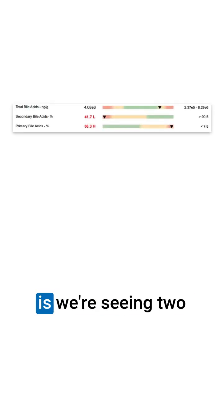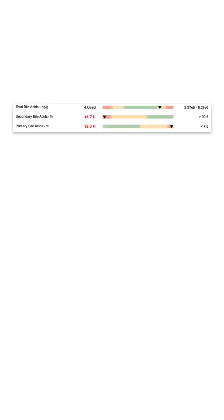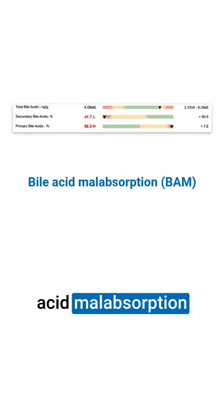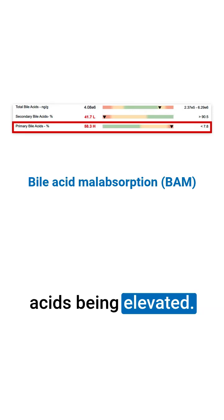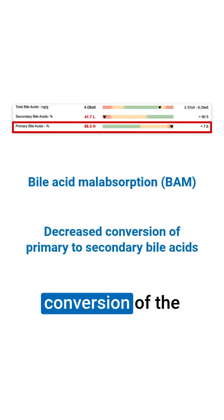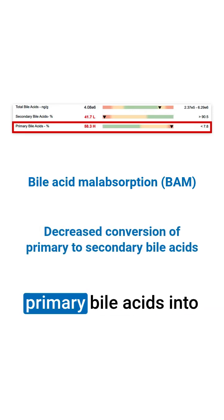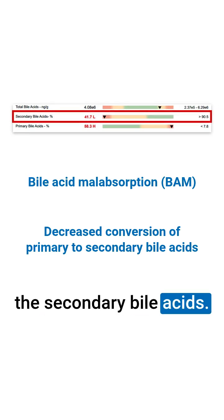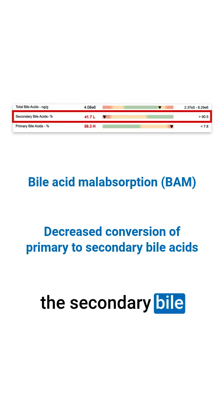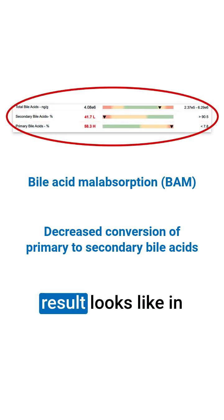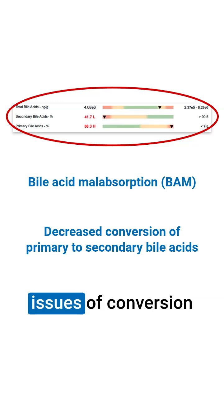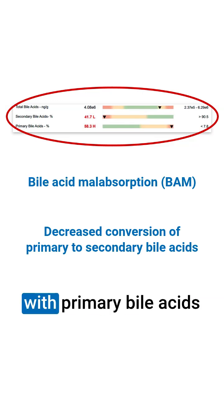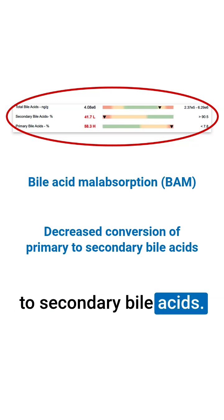What we see here is two things happening. We're seeing some bile acid malabsorption through the primary bile acids being elevated. And we are also seeing a problem with conversion of the primary bile acids into the secondary bile acids. You can see here that the secondary bile acids look quite low. So this is what a result looks like in someone with bile acid malabsorption and issues of conversion with primary bile acids to secondary bile acids.